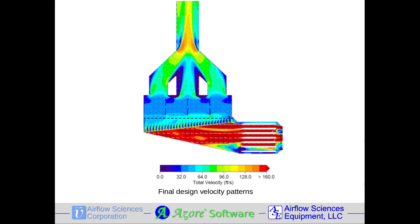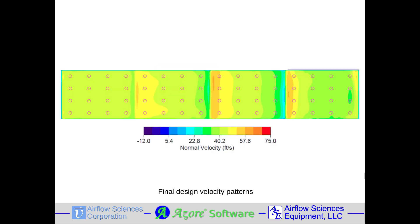These design changes resulted in a flow field that achieved both uniform and aligned flow entering the tube bank region. The resultant CFD flow profile upstream of the tube bank eliminated the higher velocities and reduced the RMS from 28% down to 11%, achieving project goals.